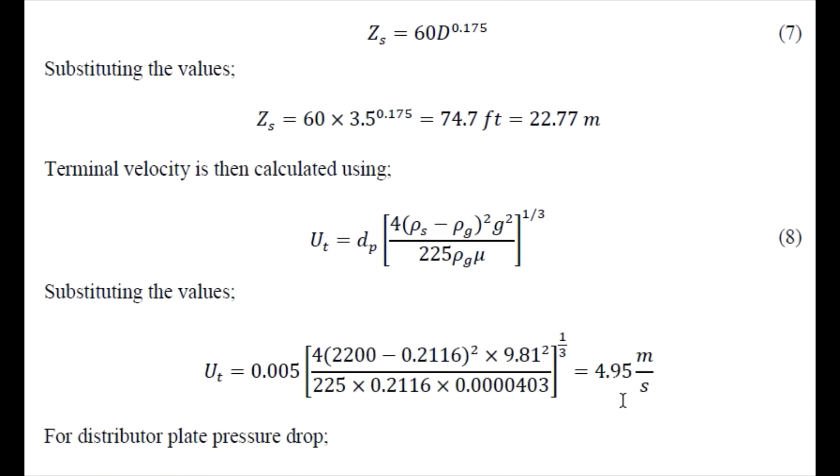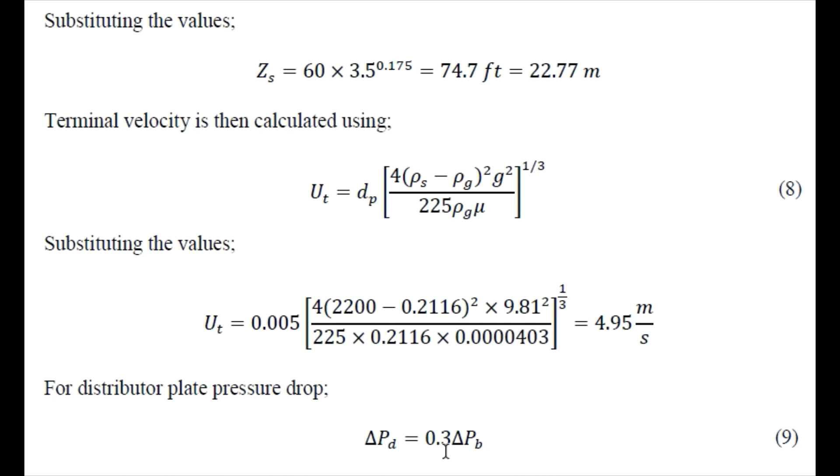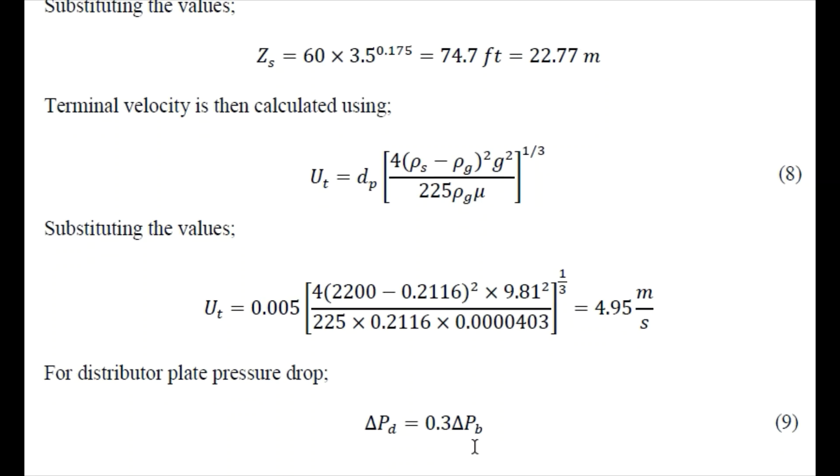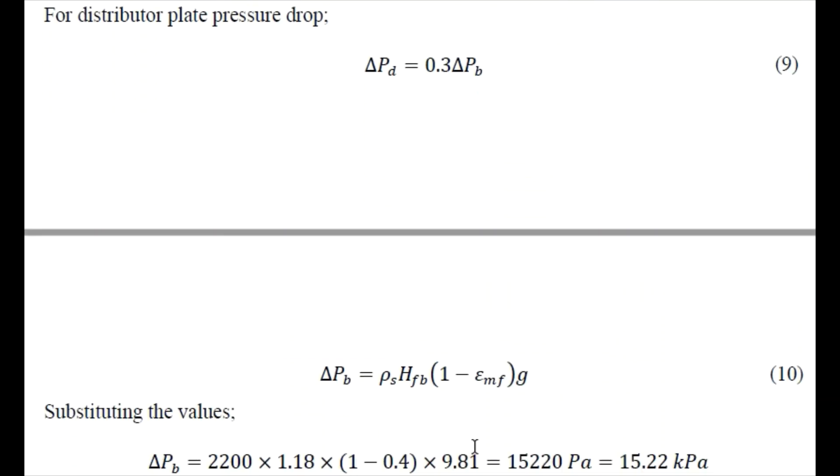Now we have a distribution plate that is at the bottom of the fluidized bed. How much is the pressure drop there in the distribution plate? That is basically 30 percent of the total bed pressure drop. Now we need to find the pressure drop in the bed. For that we have this equation where we have density of the solids, height of the bed, minimum voidage fraction, and gravitational constant. Substituting these values we obtain the pressure drop of the bed as 15.22 kilopascal. So now we can determine the distribution plate pressure drop, it comes out to be 4.57 kilopascal.